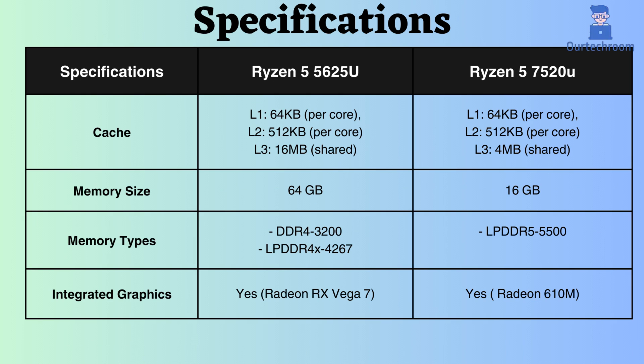The L1 and L2 cache size for both processors is 64 KB per core and 512 KB per core, but the L3 cache size of the Ryzen 5 5625U is 16 MB, whereas that of the Ryzen 5 7520U is only 4 MB shared. Due to the larger cache of the Ryzen 5 5625U, it may excel when applications heavily depend on accessing small amounts of data.